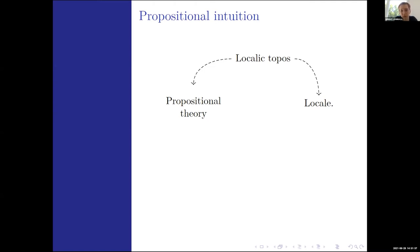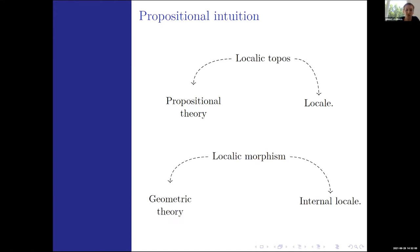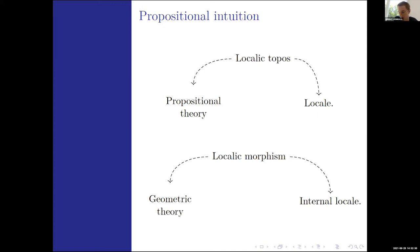In a propositional setting we have localic toposes classifying propositional theories, but we also have localic toposes coming from locales. What we want to do is extend this to where we talk in a relative topos-theoretic sense about having a localic morphism over a topos, corresponding to an internal locale. On the theory side we want to talk about what sort of geometric theory we might get out of that. I'll give some idea of what's going on with the branches of a bridge and then give a specific case which ties in very nicely with the logic.